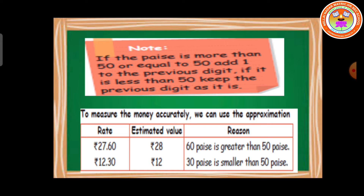See the next example: 12 rupees 30 paise. The paise value is less than 50 paise, so what we have to do is keep the previous digit as it is. The previous digit here is 12, that is your rupee value, so we should not change anything — let it be as it is. The estimated value for 12 rupees 30 paise is equal to 12 rupees. Is it clear, students?